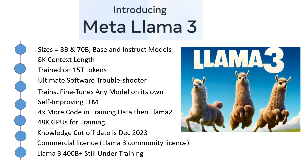Meta opted for a relatively standard decoder-only transformer architecture in Llama 3, but made several key improvements over Llama 2. Llama 3 uses a tokenizer with a vocabulary of 128K tokens, which encodes language much more efficiently and leads to substantially improved model performance. They also adopted grouped query attention (GQA) across both 8B and 70B sizes, and trained the model on sequences of 8K tokens using a mask to ensure self-attention does not cross document boundaries.